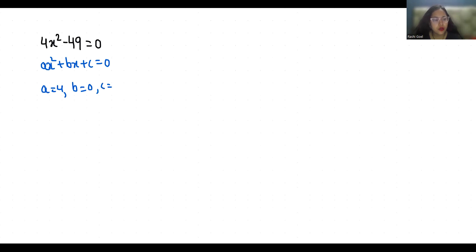First I am going to find the discriminant, that is b square minus 4ac. So 0 square minus 4 times 4 times minus 49. 4 times 4 is 16 times minus 49, that is minus minus is plus 784.